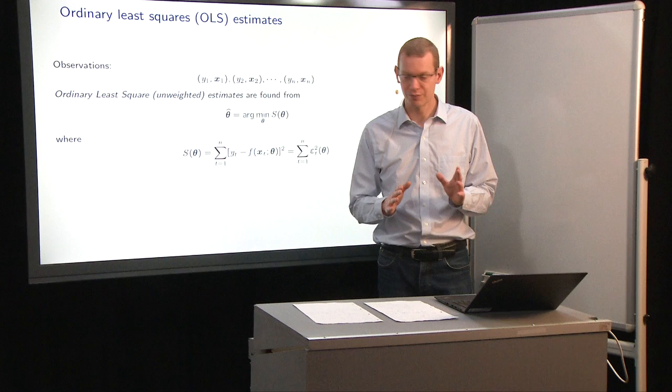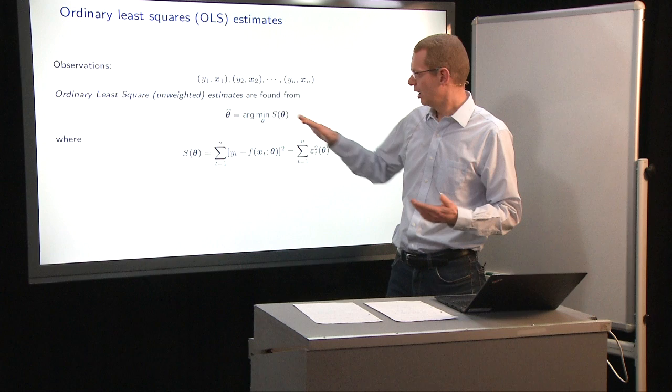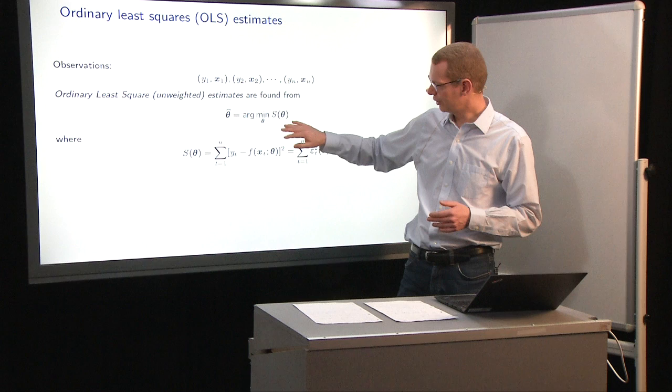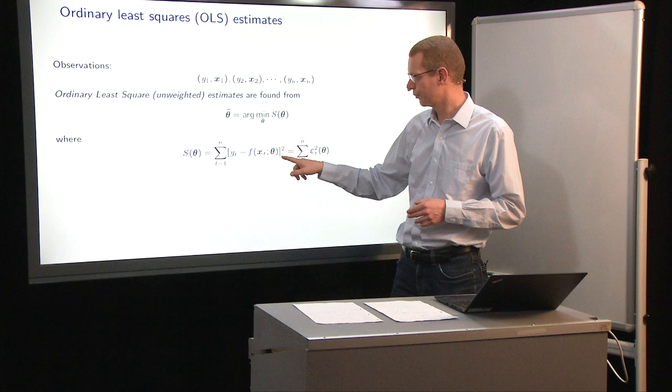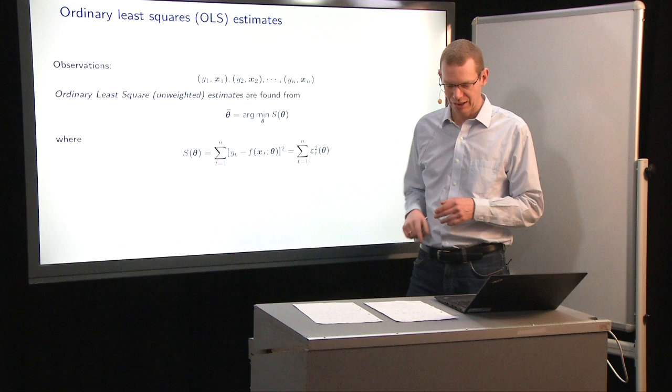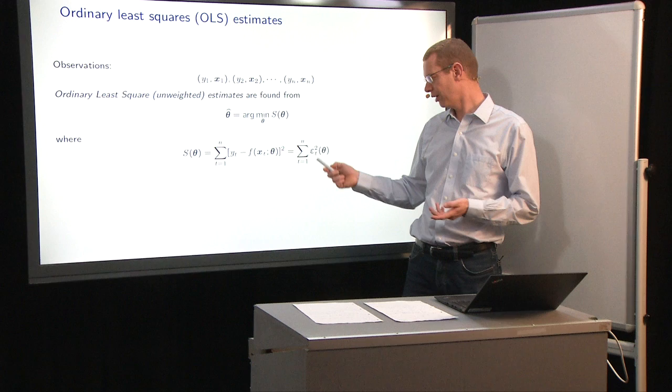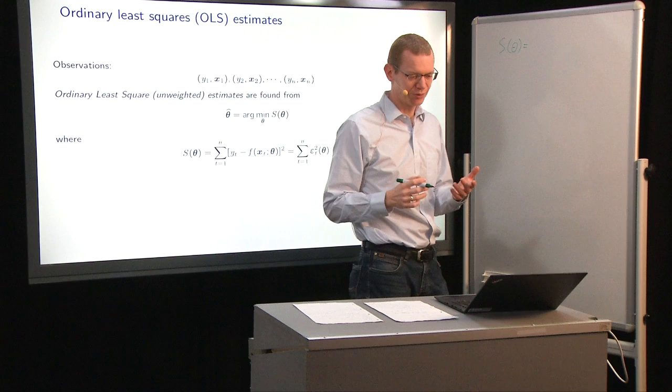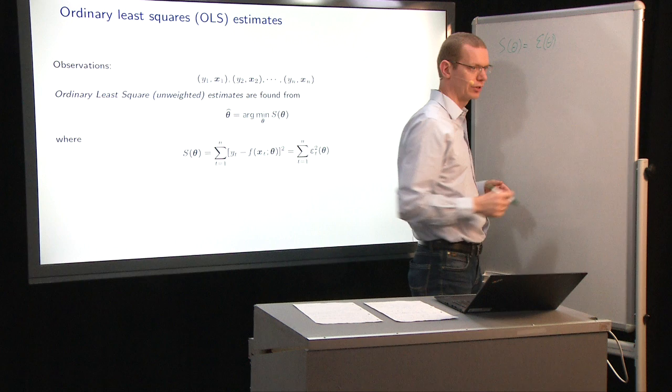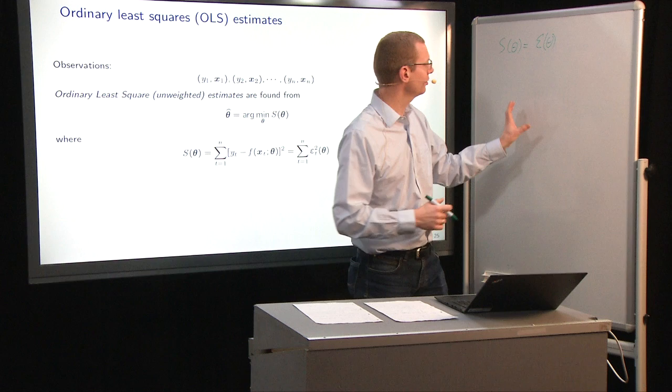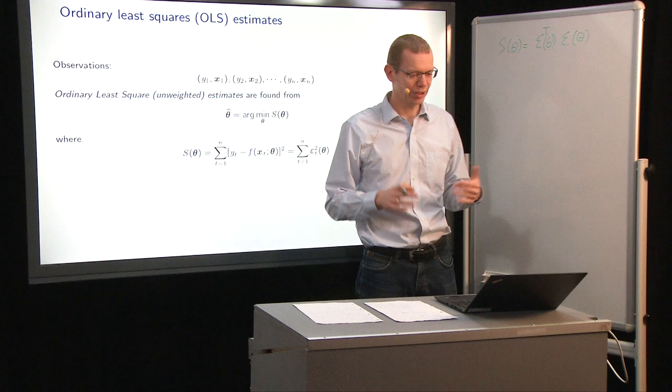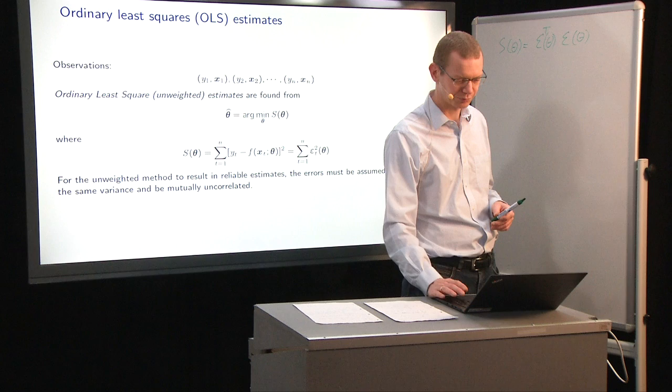In the ordinary least square setting, we have pairs of observations with predictors. We say we have n of those. What we want to do is to find the set of parameters that minimize the sum of squares. We can write it like this, where we define s of theta as the sum of the prediction errors, from t equals 1 to n. When I see a sum like this, I prefer to deal with things as vectors. So s of theta here, if epsilon of theta, because the epsilon depends on the function of the parameters, if that's a column vector, then if we take the transpose and multiply it with itself, then we have an inner product, and with that inner product, we get the sum.